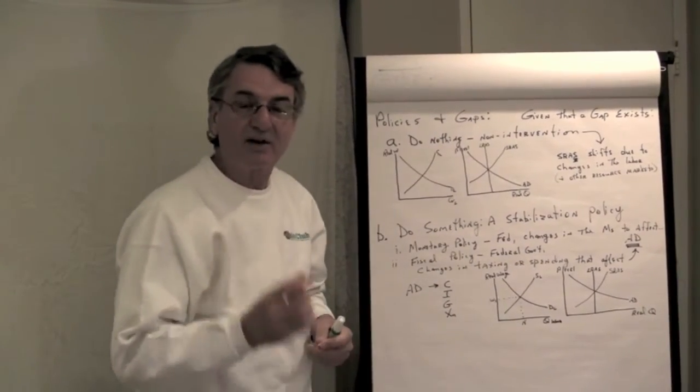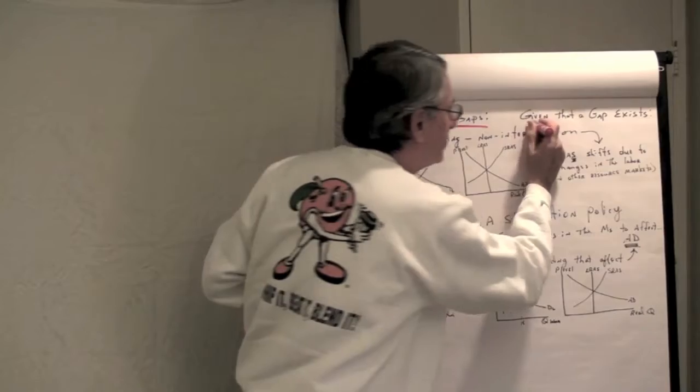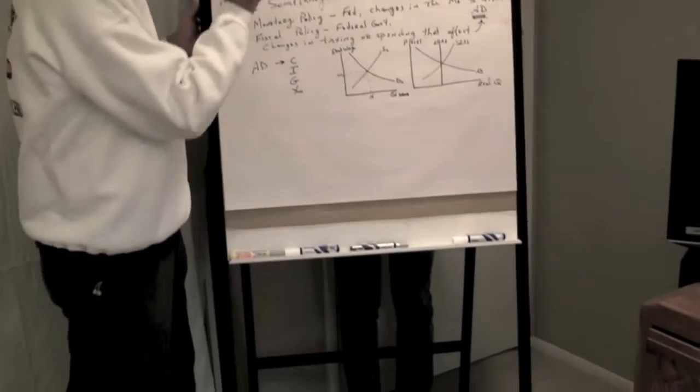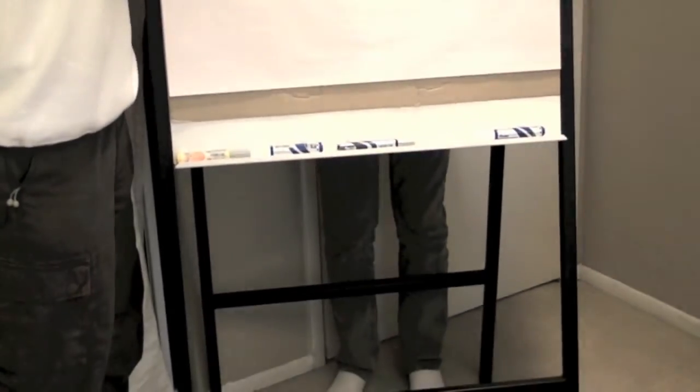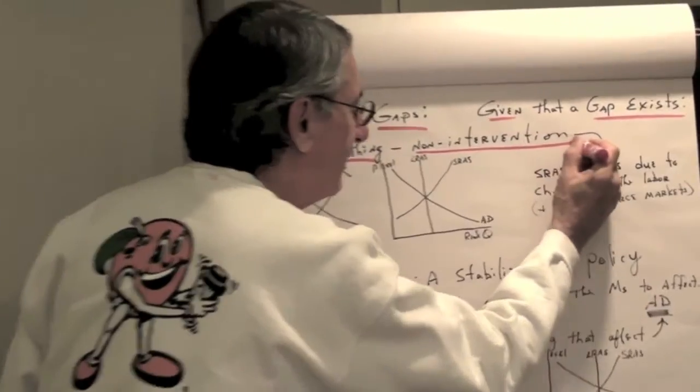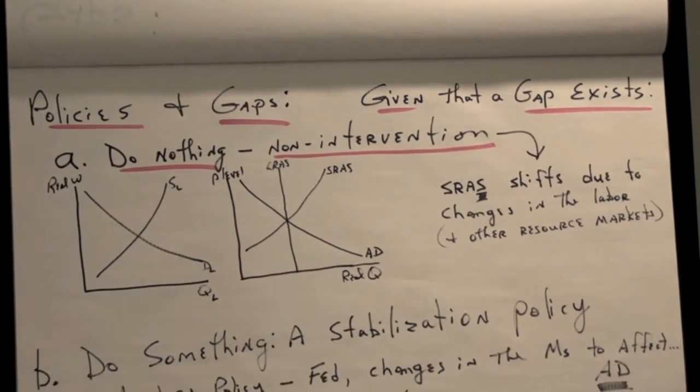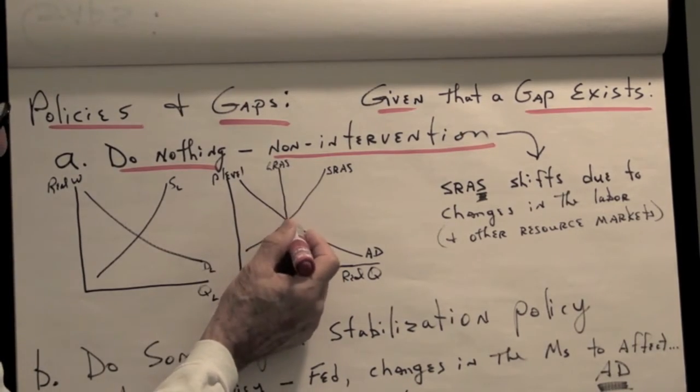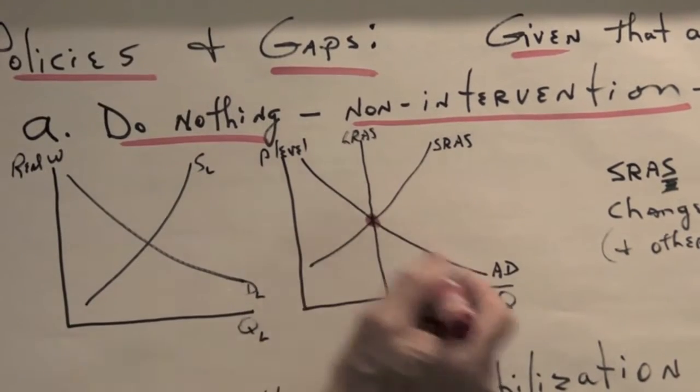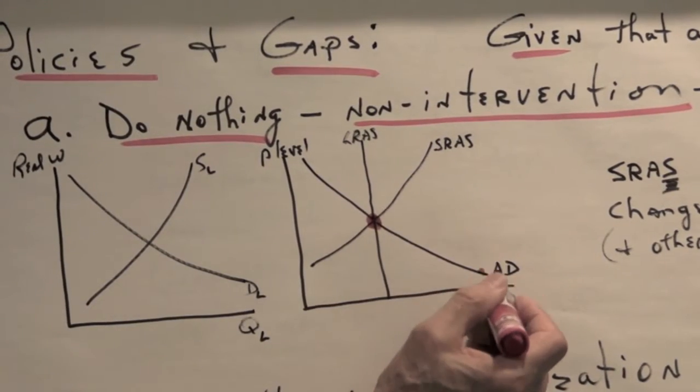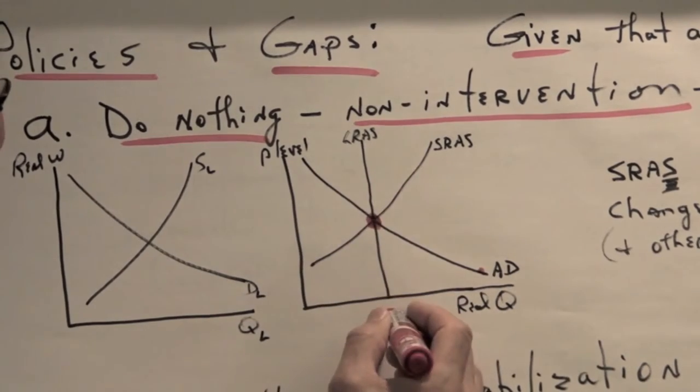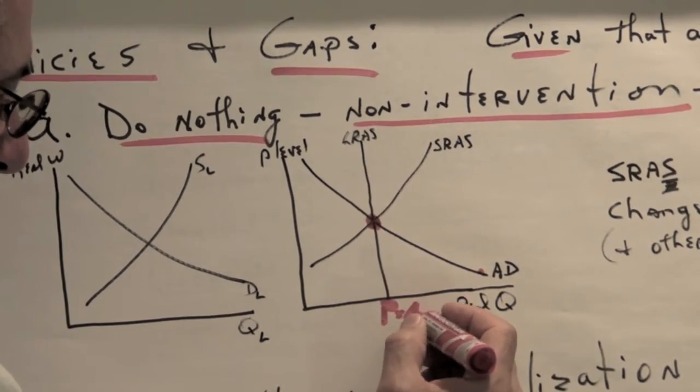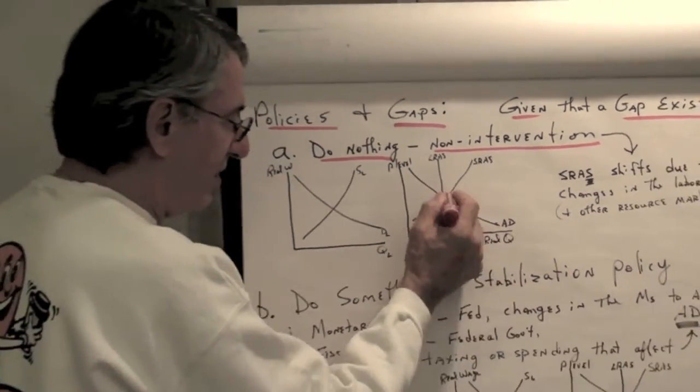Alright, this is Macro, and so we're talking about if you have a gap. Assuming that a gap exists, what do you do about it? Well, there are two possibilities. When you have a problem, a gap, you can either do nothing, which has a name. The name of doing nothing is non-intervention. Let's say that we have the economy doing fine, there is no gap. The actual level of output, that intersection here of short-run aggregate supply and aggregate demand, is exactly equal to the potential level of output shown by the long-run aggregate supply. So there's actual equals potential, there's no gap.